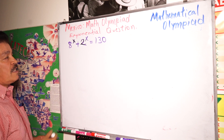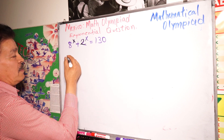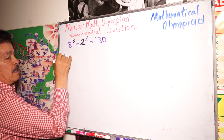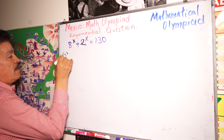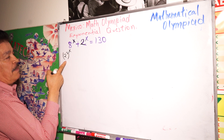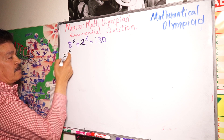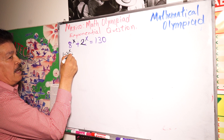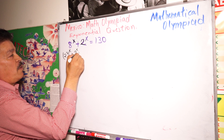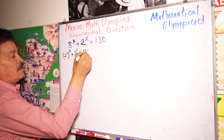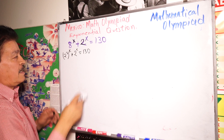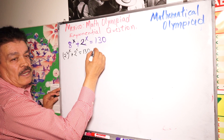I think the first step should be this: rewrite 8 as 2 to the third power, so we have 2 to the third power to the exponent X, plus 2 to the X power equals 130.